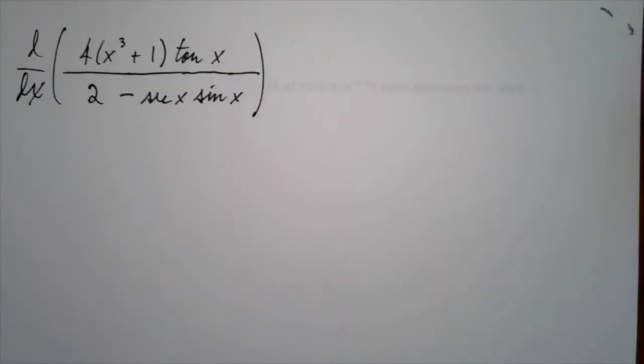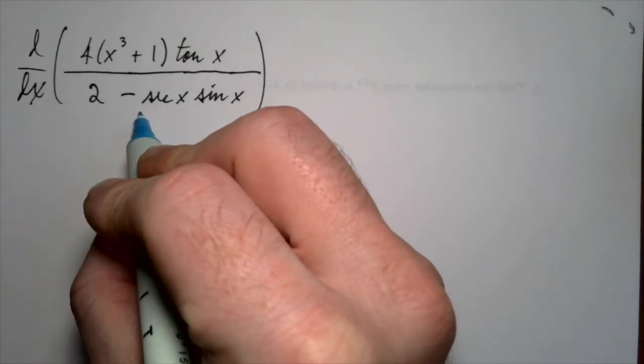Let's take the derivative of four times x cubed plus one times tangent of x, all divided by two minus secant of x times sine of x. Now, why in the world would you want to do such a thing? Well, I'm not really sure. That's the problem as it's presented to us. We're just practicing our derivative rules. We're just taking more and more complicated functions and learning how to analyze their pieces so that we can take the derivative overall by carefully proceeding step by step. Now, before we proceed with this one, it will be a quotient rule, but there's a little bit of simplification that we can do.